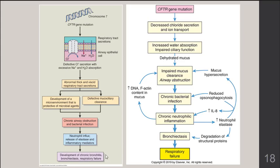Affected exocrine glands include bronchial glands, gallbladder, pancreas, salivary glands, testes, and sweat glands — but effects are most dramatic in the airways. These individuals can develop chronic bronchitis, bronchiectasis, and respiratory failure. The gene mutation leads to decreased chloride secretion and ion transport, increased water absorption, dehydrated mucus, impaired mucus clearance, bacterial infection, worsening inflammation, bronchiectasis, and ultimately respiratory failure.